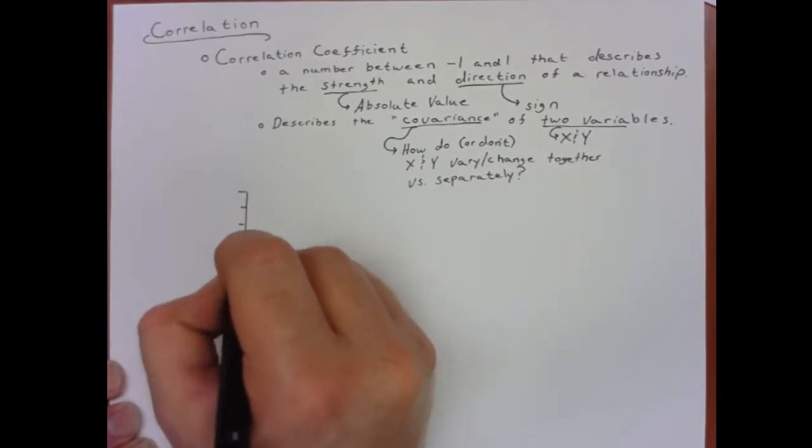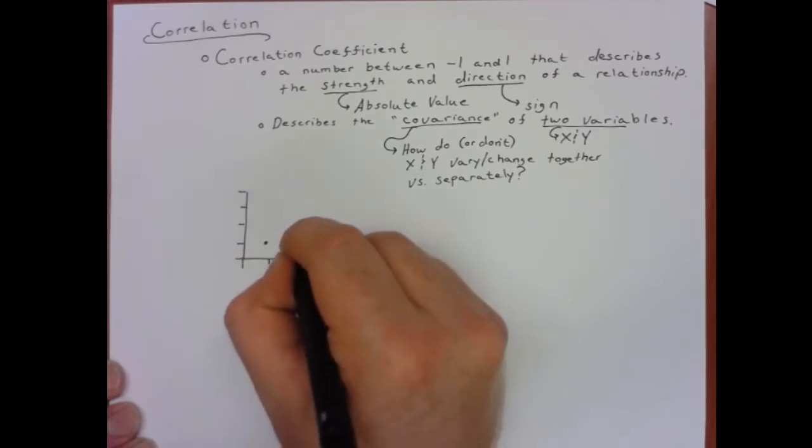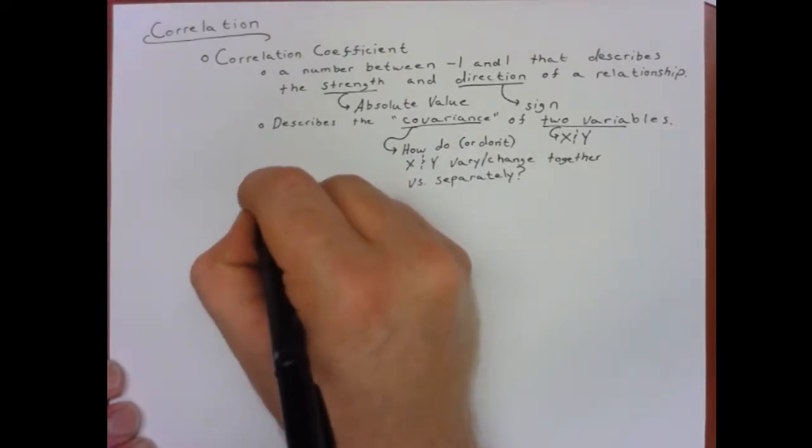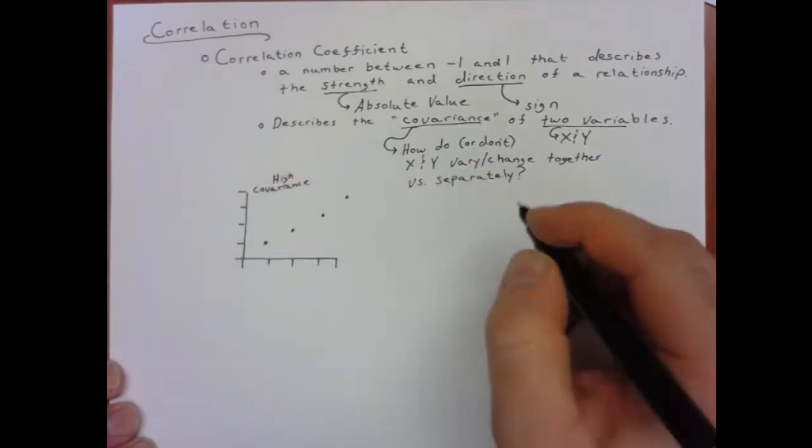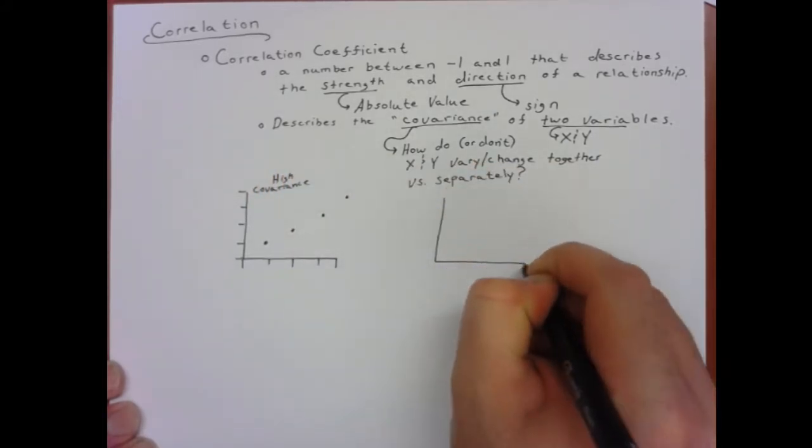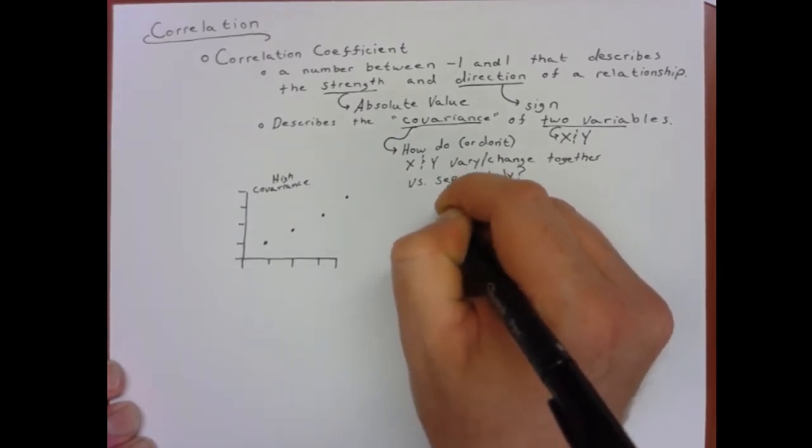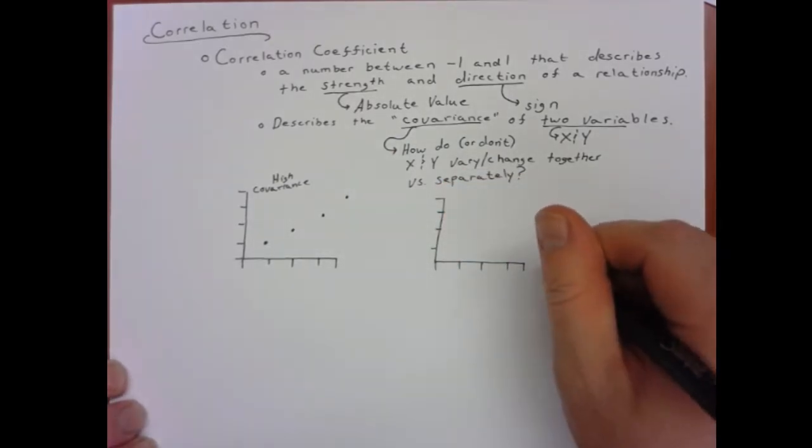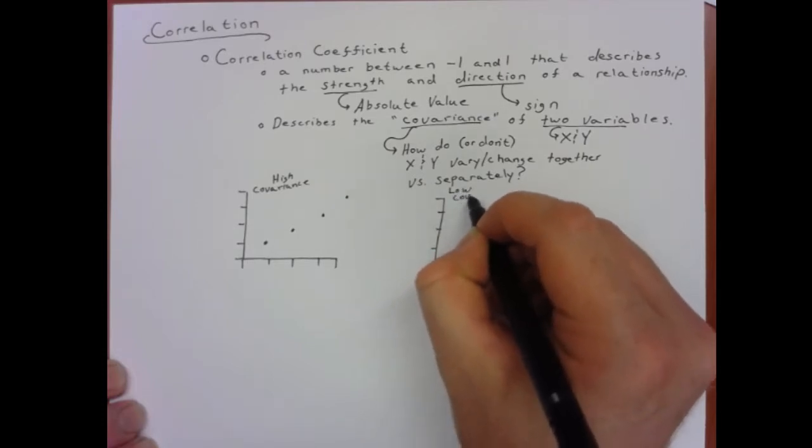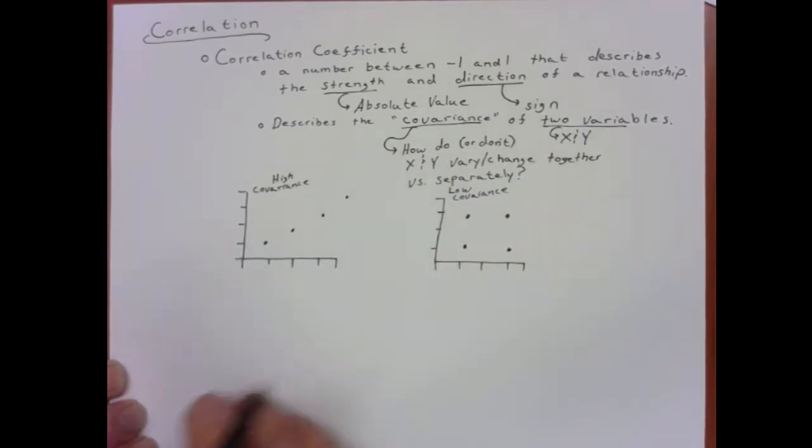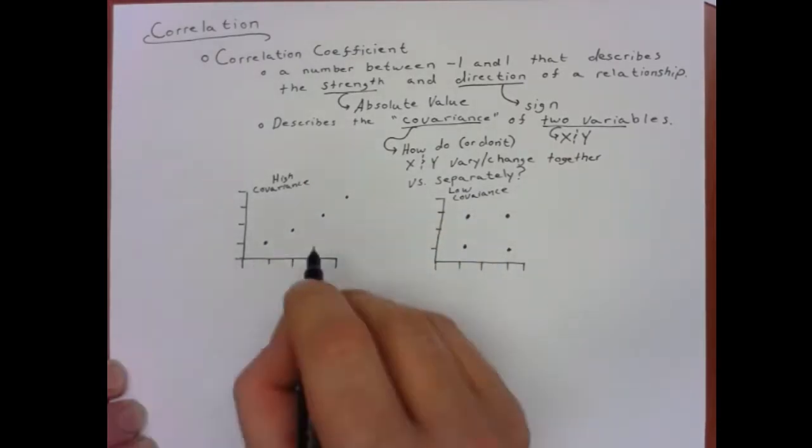To illustrate this, let's sketch out two quick scatter plots. One where we have a high degree of covariance, which you can see is essentially a straight line where all the points line up. The other would be a degree of low covariance, where there's no relationship between these two variables, and this would really kind of look like just a blob where there's no consistent pattern relative to how they're varying.